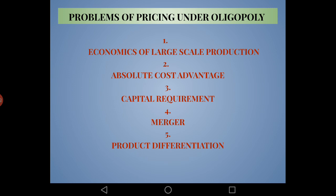The fifth point is product differentiation. In some cases, product differentiation provides an important advantage to firms. With the help of product differentiation, a firm can control a large proportion of total sales. If a firm provides a more distinctive product than rivals, it becomes capable of controlling the market to some extent. By providing different features, the firm will definitely attract customers and gain market control.